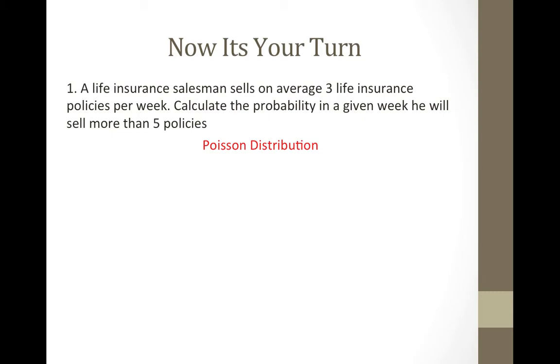The answer is Poisson distribution. The tell-tale sign of Poisson distribution is having any type of average or mean mentioned in the problem. For this example, the life insurance salesman sells on average three life insurance policies. The three insurance policies would be your lambda value in this case.